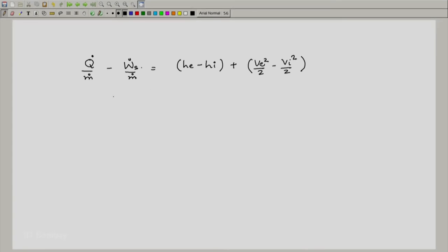So we want W_s_dot. We just put everything else to the right. We write W_s_dot by m_dot equals Q_dot by m_dot minus (h_e - h_i) minus (v_e^2/2 - v_i^2/2).